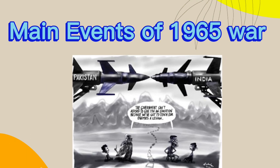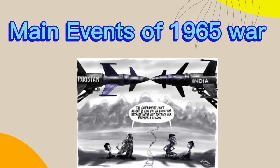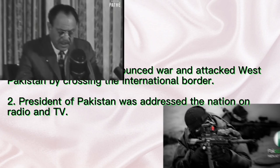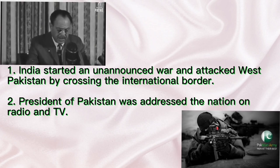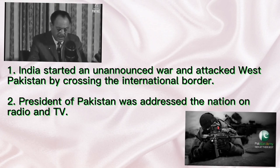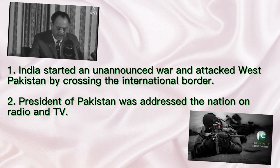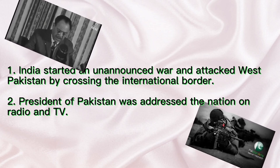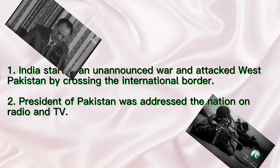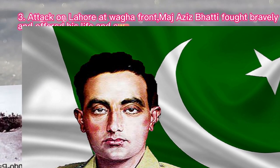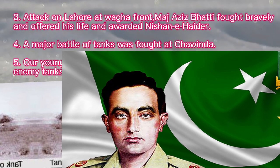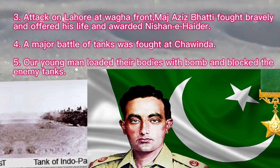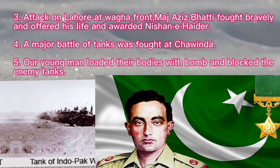Main events of the 1965 War: India started an unannounced war and attacked West Pakistan by crossing the international border. The President of Pakistan addressed the nation on radio and TV. There was an attack on Lahore at the Wagah Front — Majaziz Bhatti fought bravely, offered his life, and was awarded the Nishan-e-Haider.